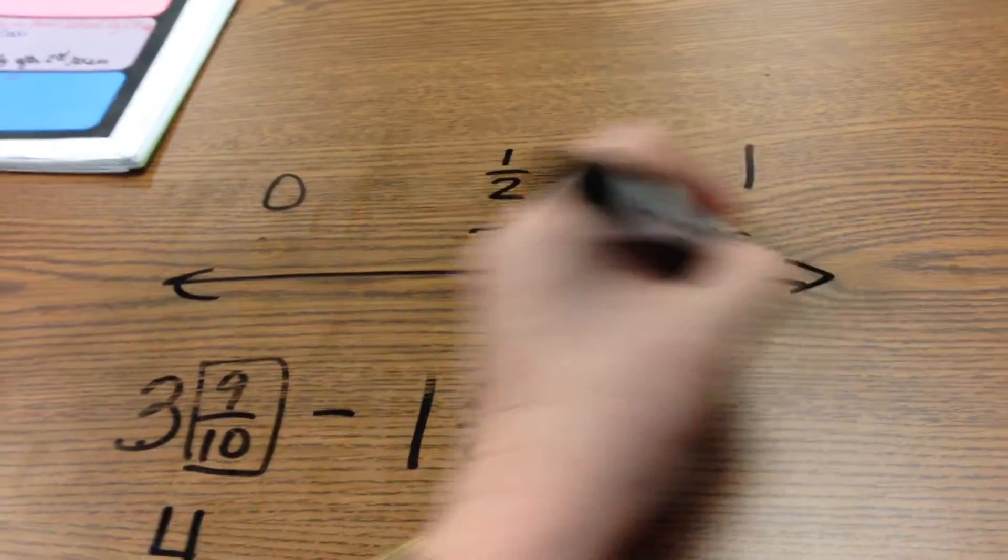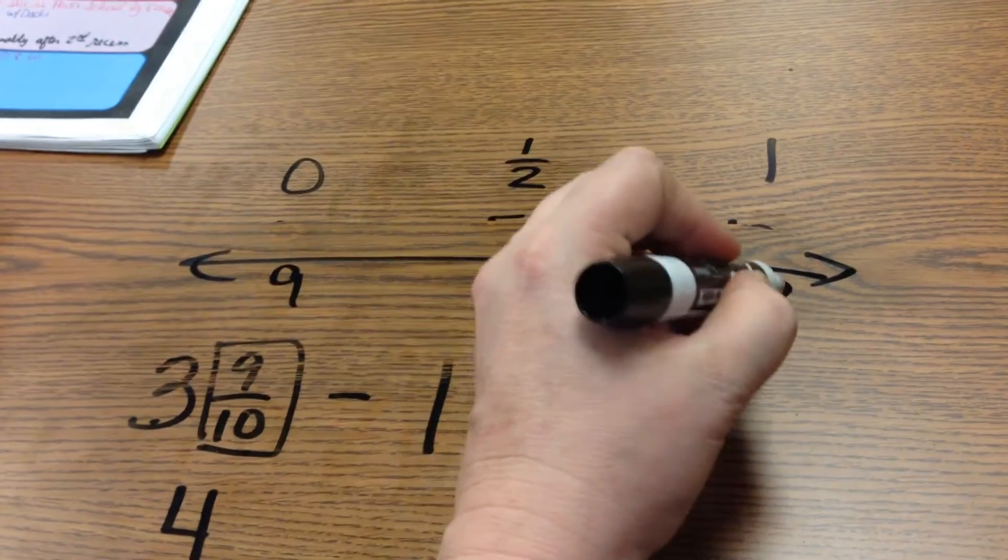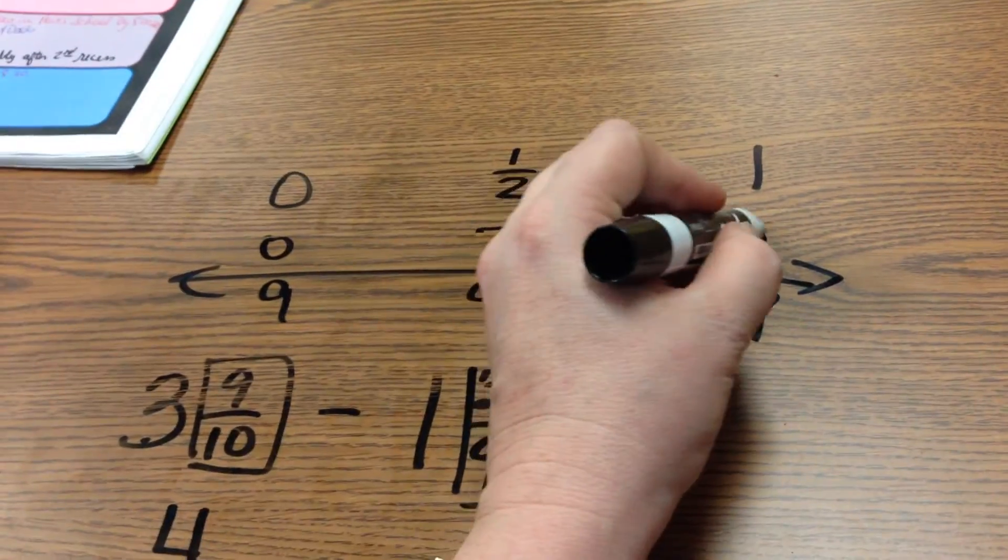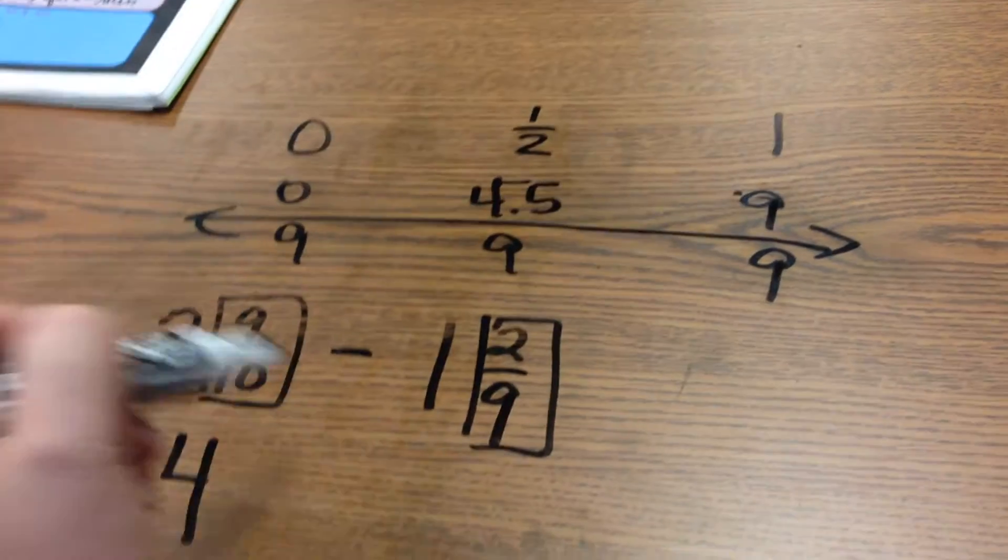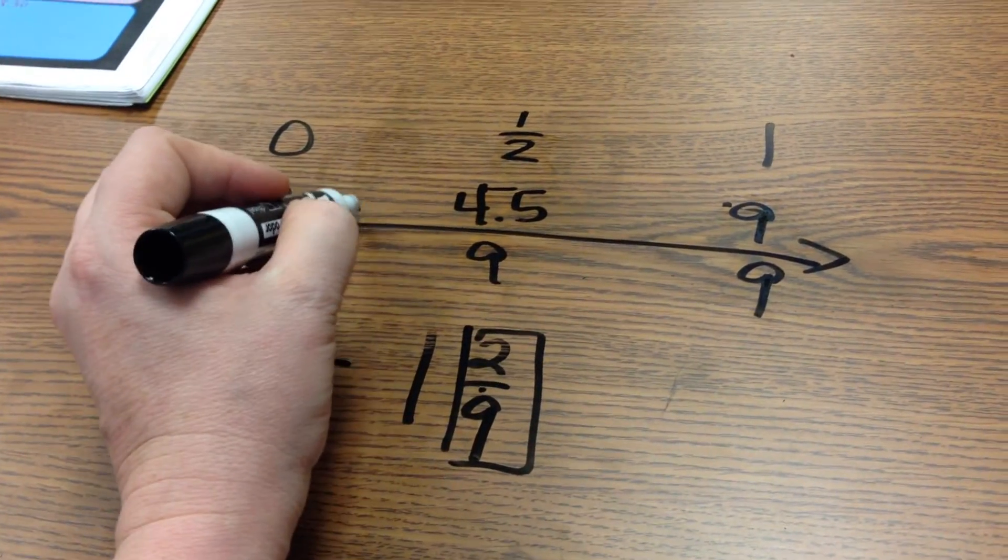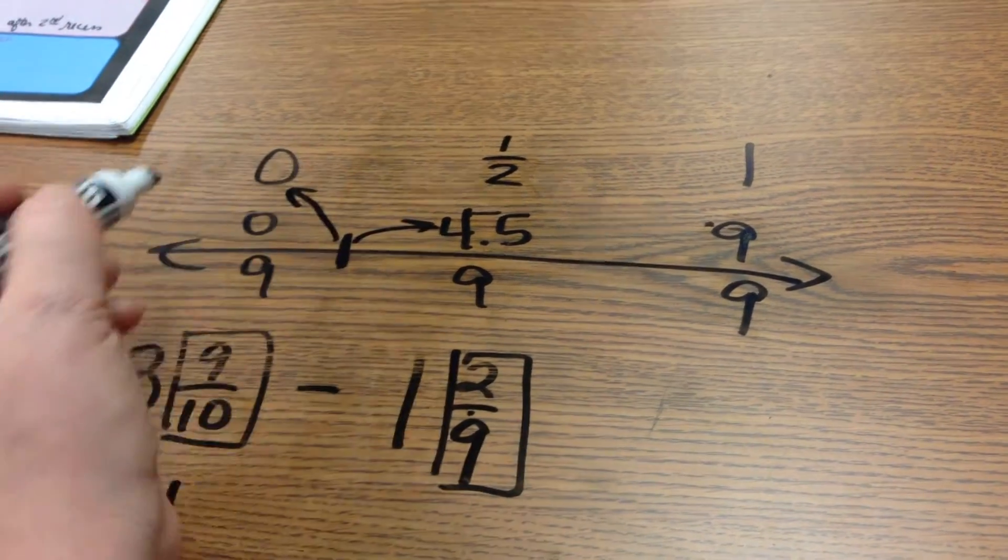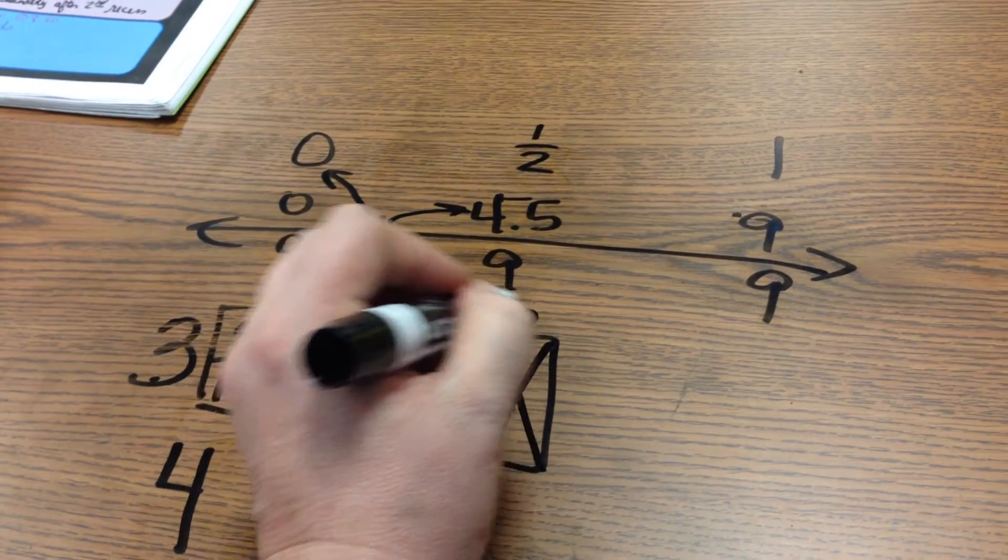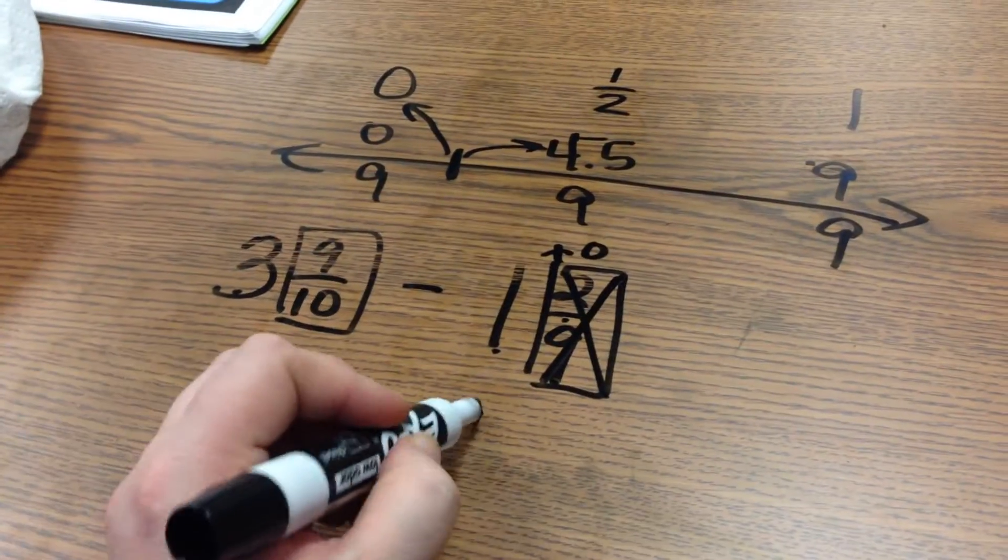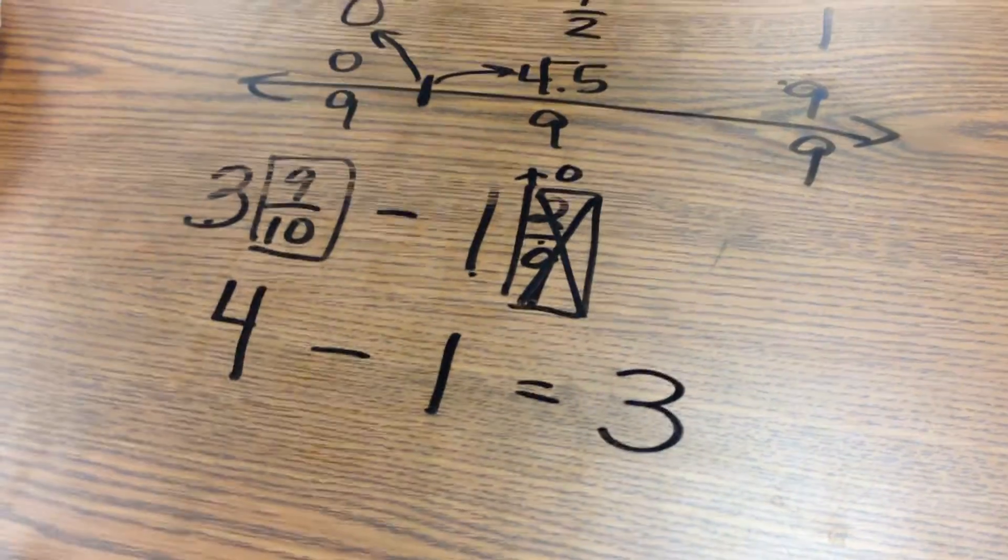And for this last one, we're going to look at just the ninths, just the fractions. Zero-ninths. Nine-ninths equals one. Half of nine would be four-and-a-half. Two-ninths would be over here. And it's a little bit closer to zero than it is to four-and-a-half. So this would round to zero. Okay? So this would be like having one plus zero. So that would equal one. So when I subtract, four minus one equals three.